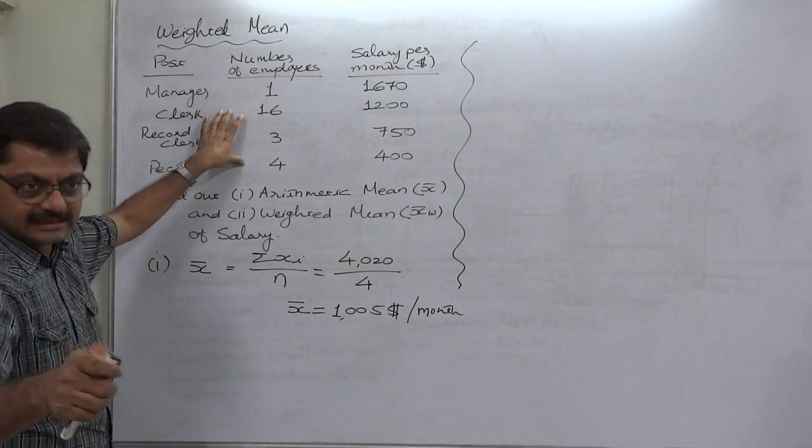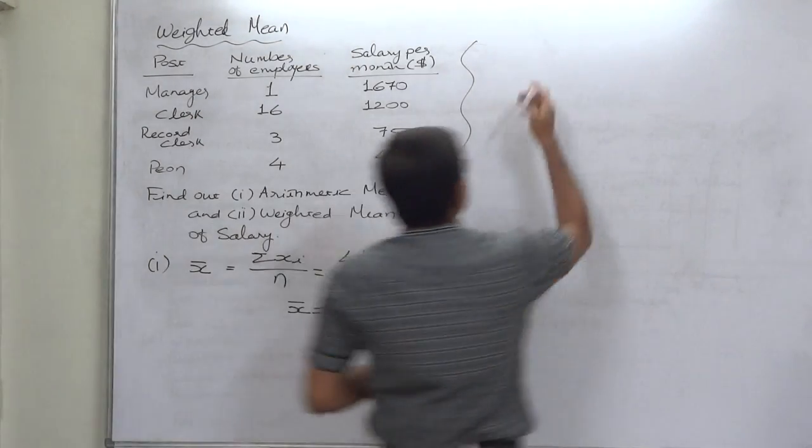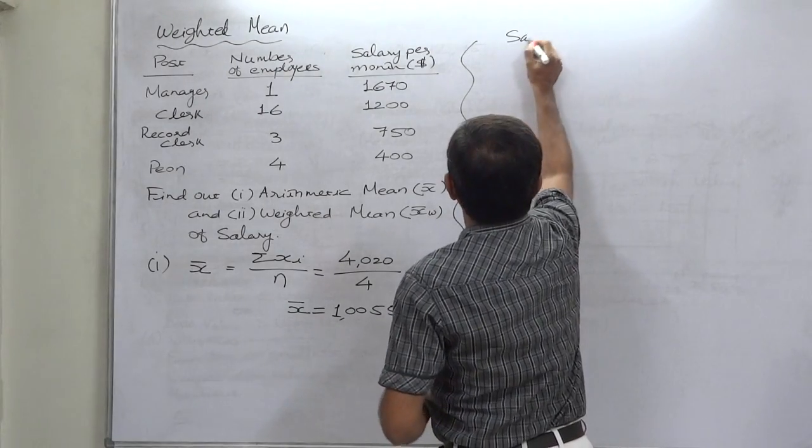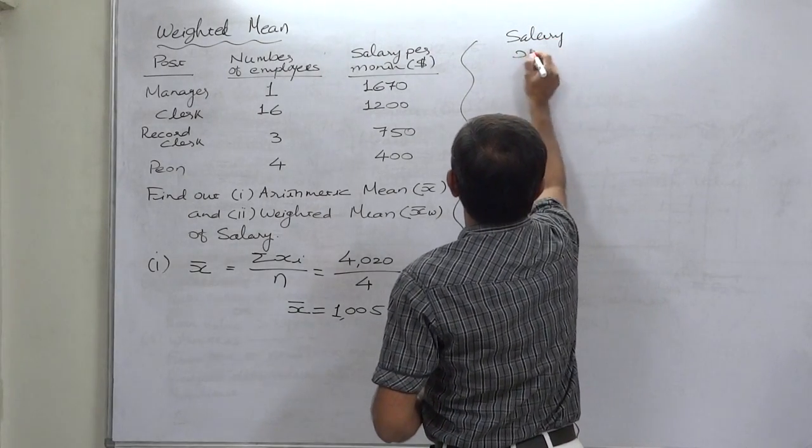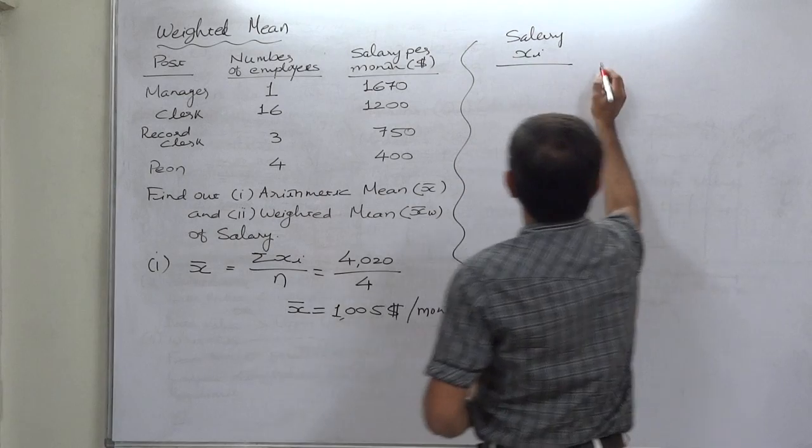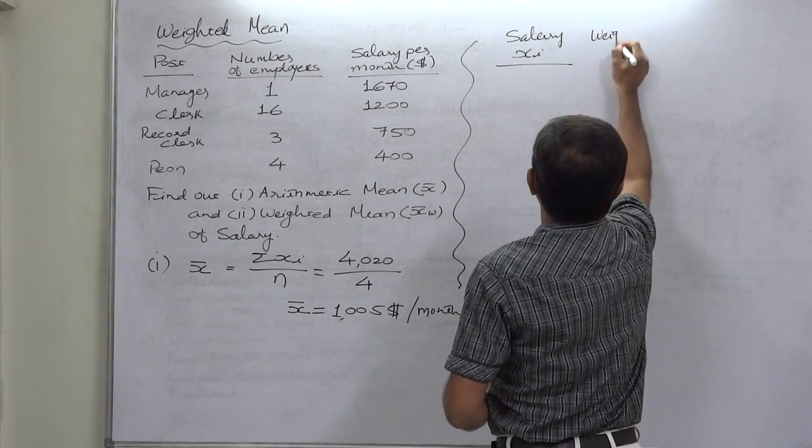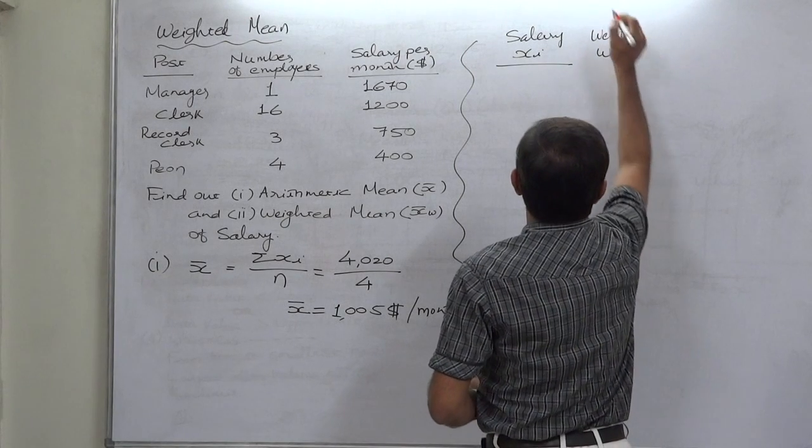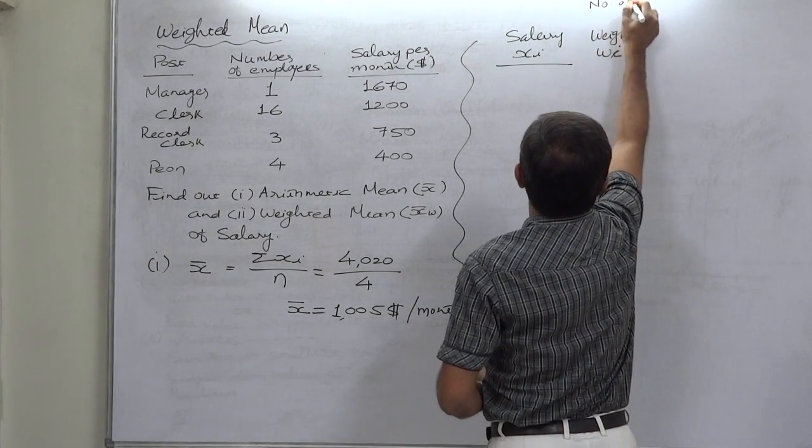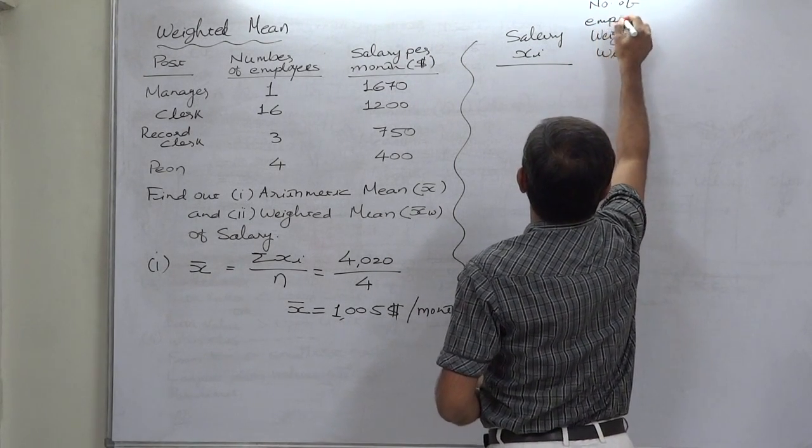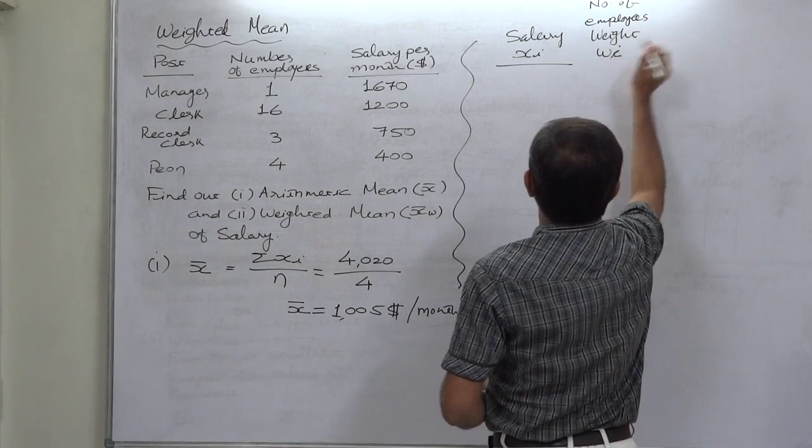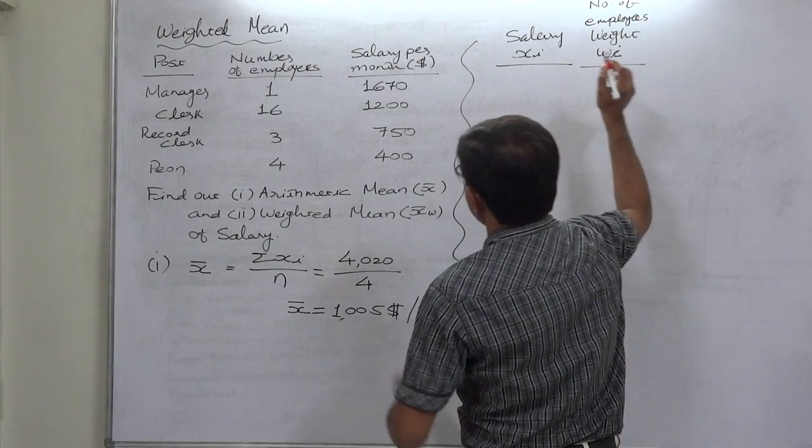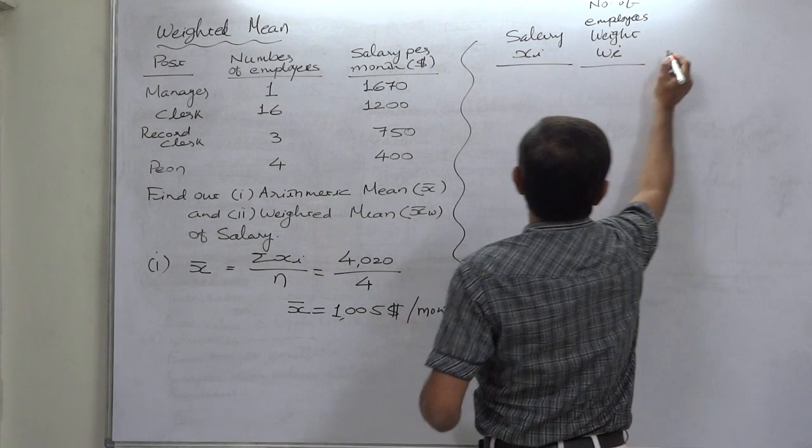So salary, say it is X. Weight, that is W. Here what is weight? It is number of employees that will be taken as weight. Now multiply these two.